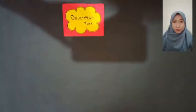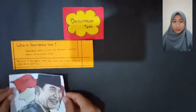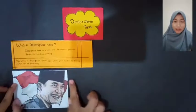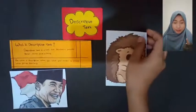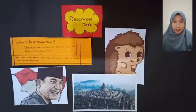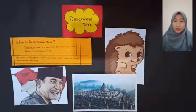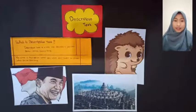Do you know what descriptive text is? Descriptive text is a text that describes a particular person, animal, place, or thing. Descriptive text adalah teks yang menjelaskan orang, hewan, tempat, atau benda tertentu. You write a description when you want a reader to picture what you are describing. Kita menuliskan descriptive text ketika kita ingin menjelaskan apa yang kita lihat.